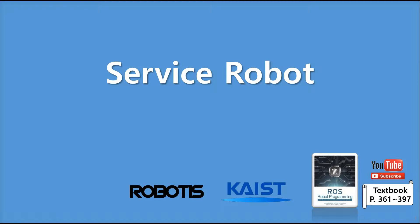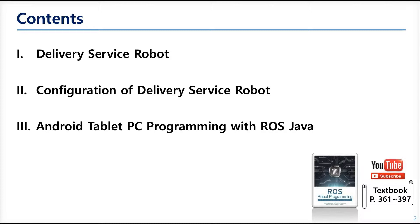You know the SLAM and you know the navigation already. So what you need more is how to use those skills for a real situation. Here we have an example: the delivery service robot. It will deliver some goods or products to someone who ordered, so we will think about how to make it with a mobile robot. There are many ways to get ordered, like by voice recognition or by the simplest way — pushing a button.